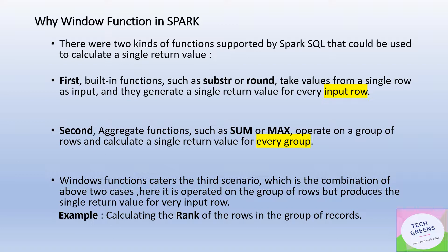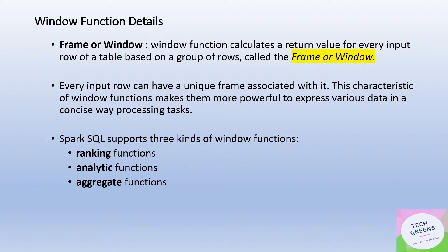This third scenario is a combination of the first two. The first scenario is one input, one output. The second is multiple inputs in the form of row groups with a single output like summation or average. The third scenario — window functions — takes input in the form of a row group and produces a return value for each row in that group. The group of rows on which you apply the window function is known as a frame or window.